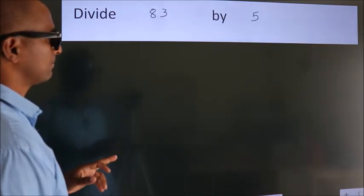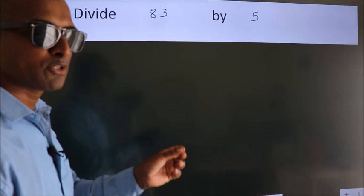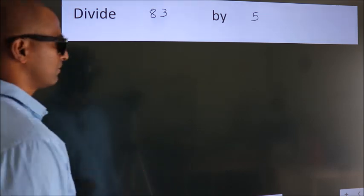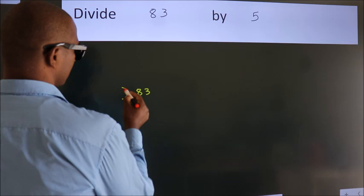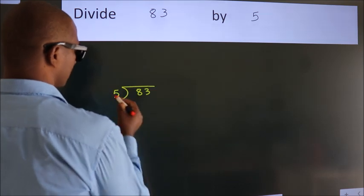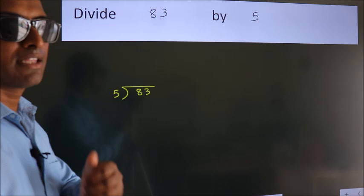Divide 83 by 5. To do this division, we should frame it in this way: 83 here, 5 here. This is your step 1. Next.